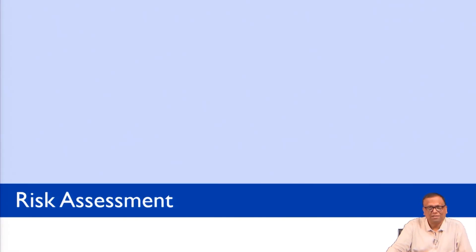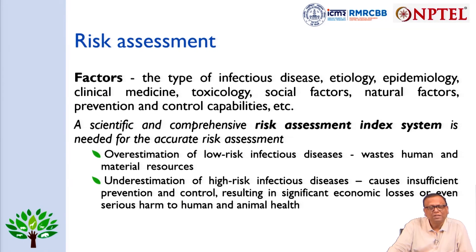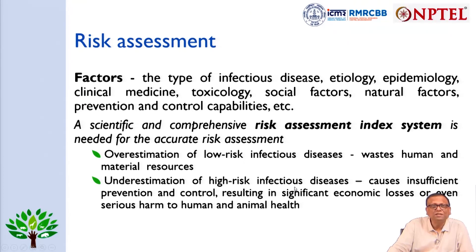How do we assess risk? There is no such thing as zero risk in this world — every area has some risk. What matters is at what stage we consider risks acceptable, so there is a need to assess the extent of risk. Factors determining this include the type of infectious disease, its etiology, epidemiology, available clinical medicines, toxicology, social factors, natural factors, and prevention and control capabilities existing in that place and system.